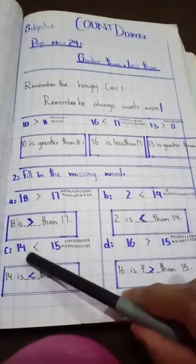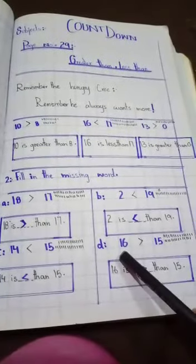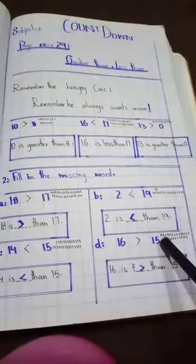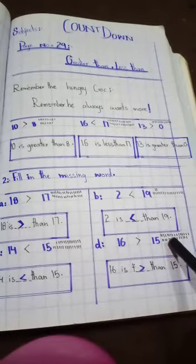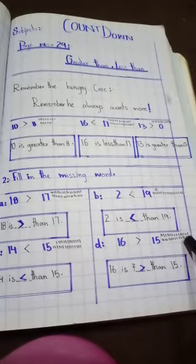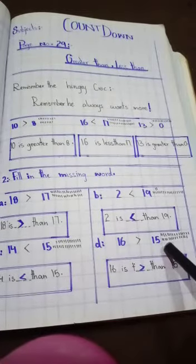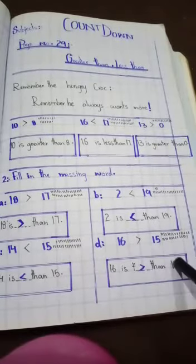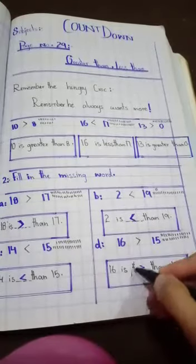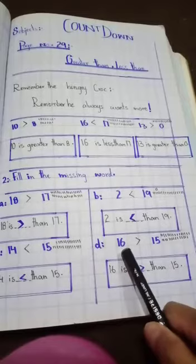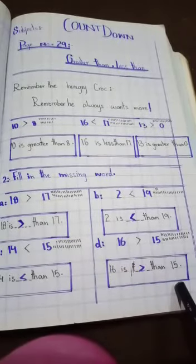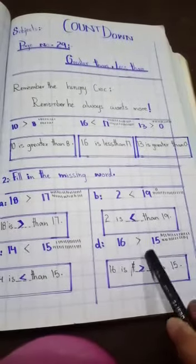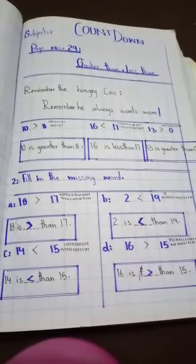Last question: 16 and 15. First I have drawn 16 lines — count 1 through 16. Then 15 — count 1 through 15. 16 is big and 15 is small, that's why 16 is greater than 15. Which is big, that is greater; which is small, that is less. Please click subscribe and like buttons. Thank you so much!